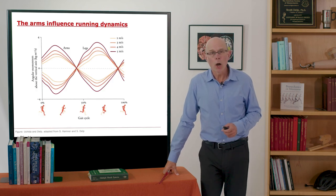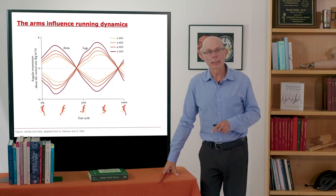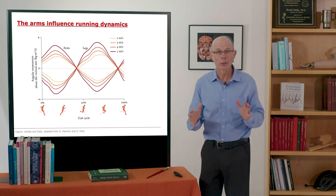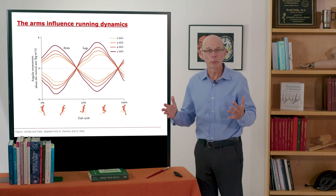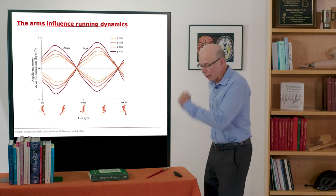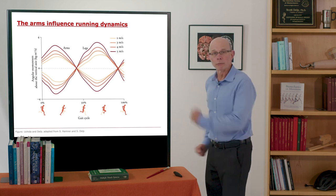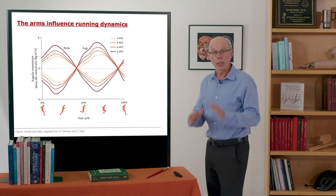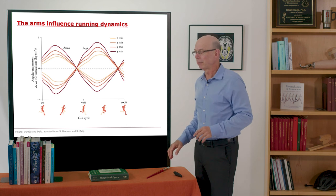So the arms influence running dynamics. Muscle-driven simulations revealed that the arms do very little for body weight support and forward propulsion. You can't really generate much ground reaction force this way. A little bit, but not much. What the arms do is a very important function.